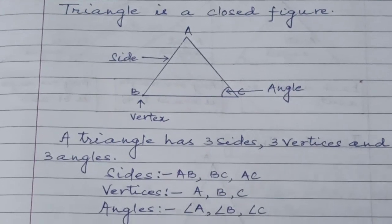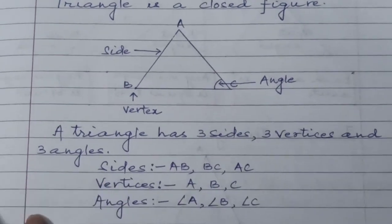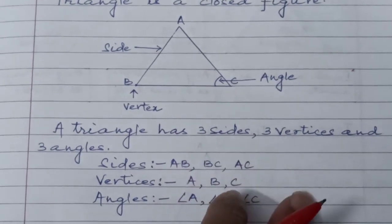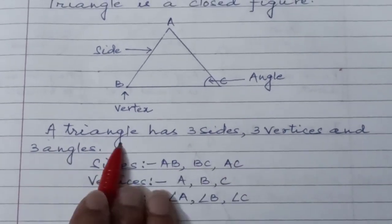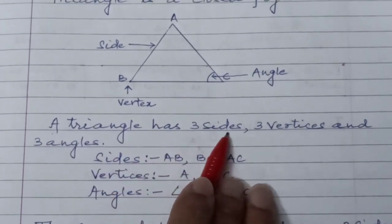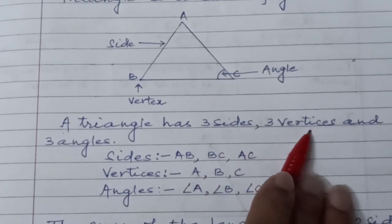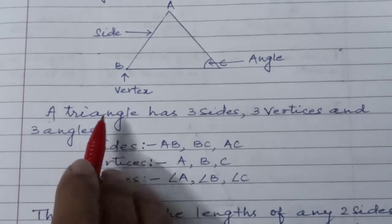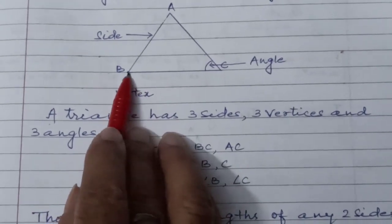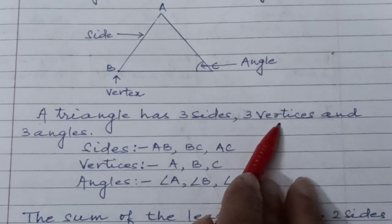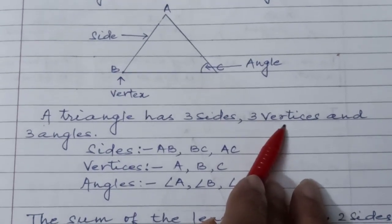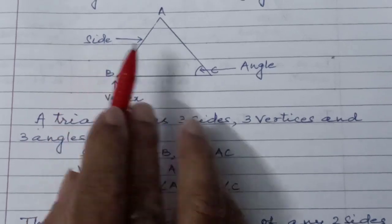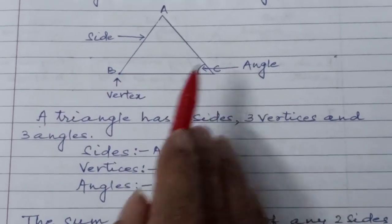I will discuss the parts of a triangle one by one. A triangle has 3 sides, 3 vertices, and 3 angles.